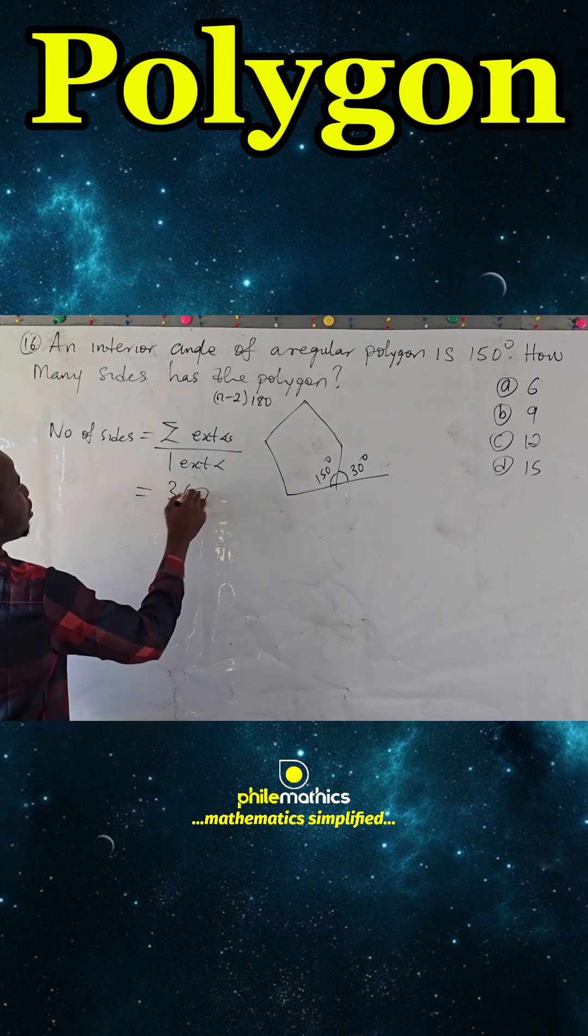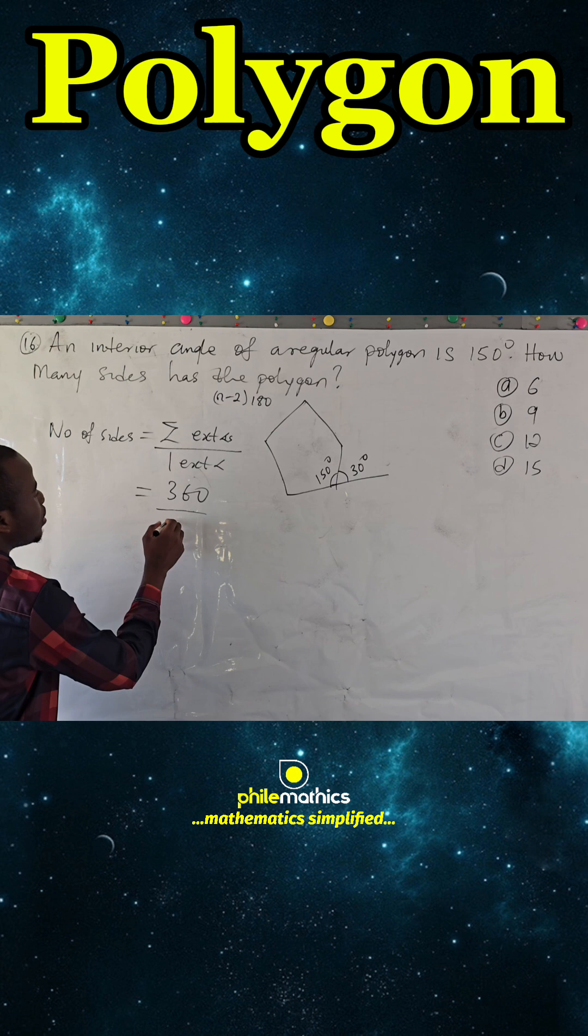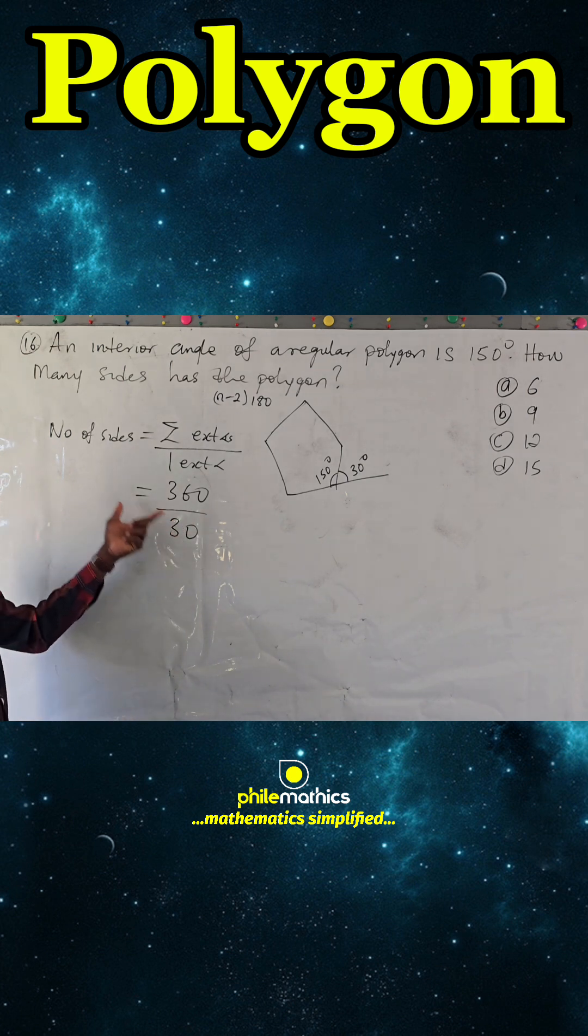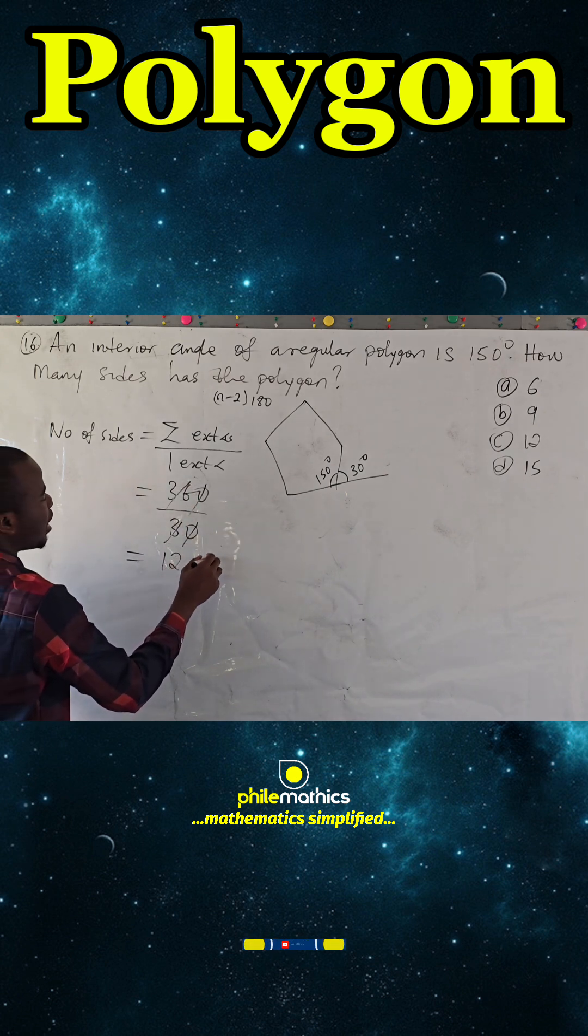It is 360 over... Now, one exterior angle we have seen is 30. This is how we get number of sides. If we divide this, this is just 12 sides.